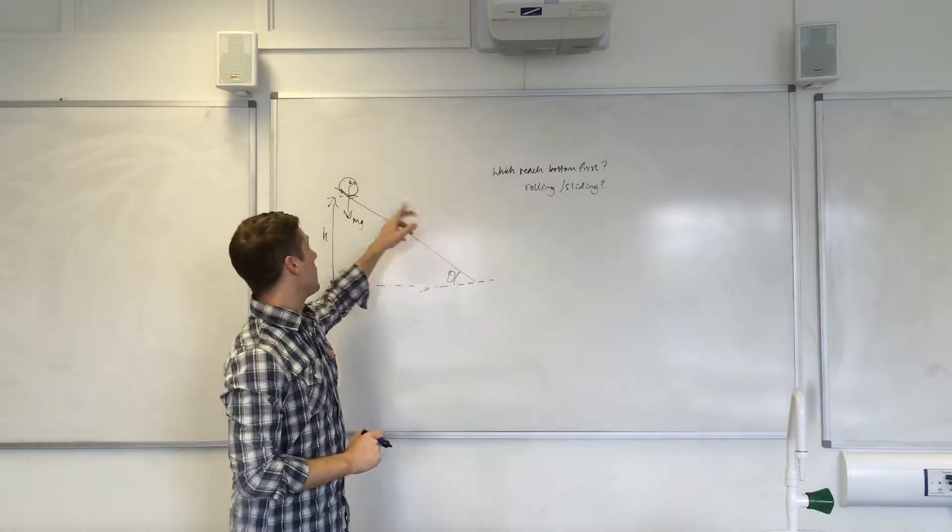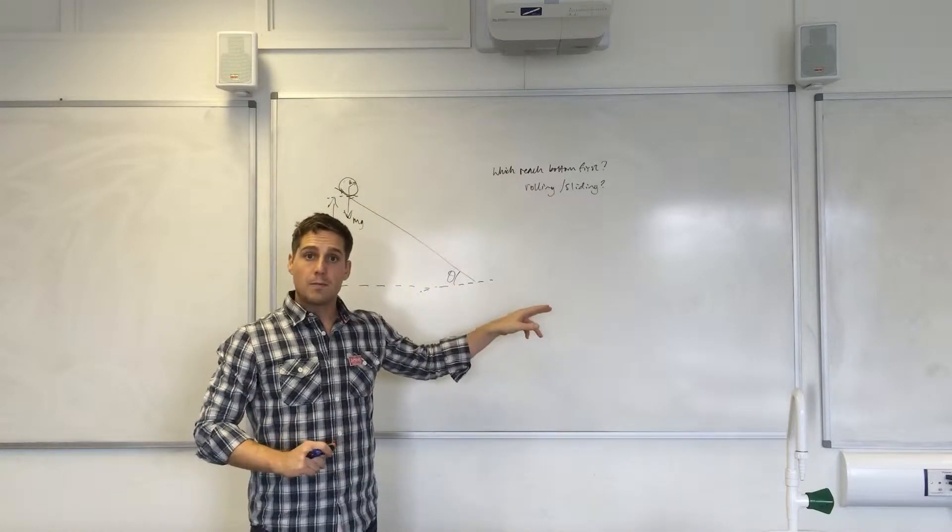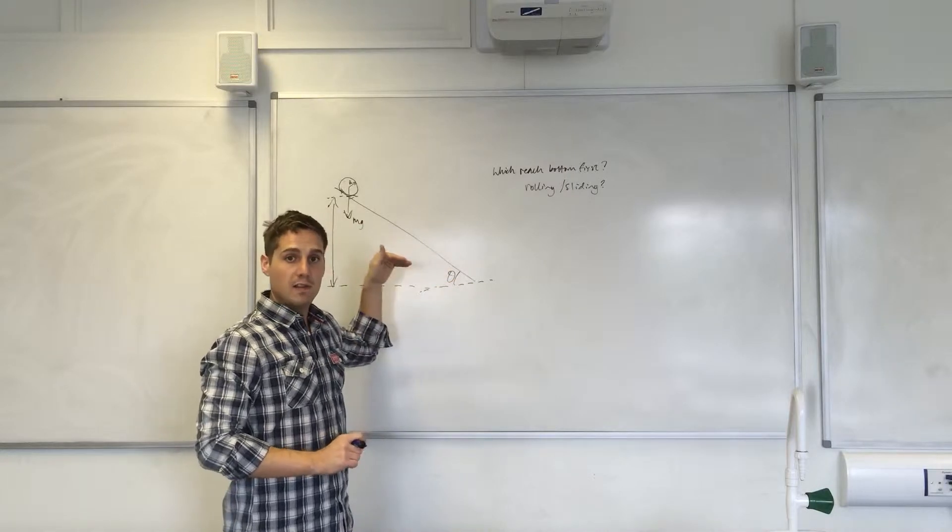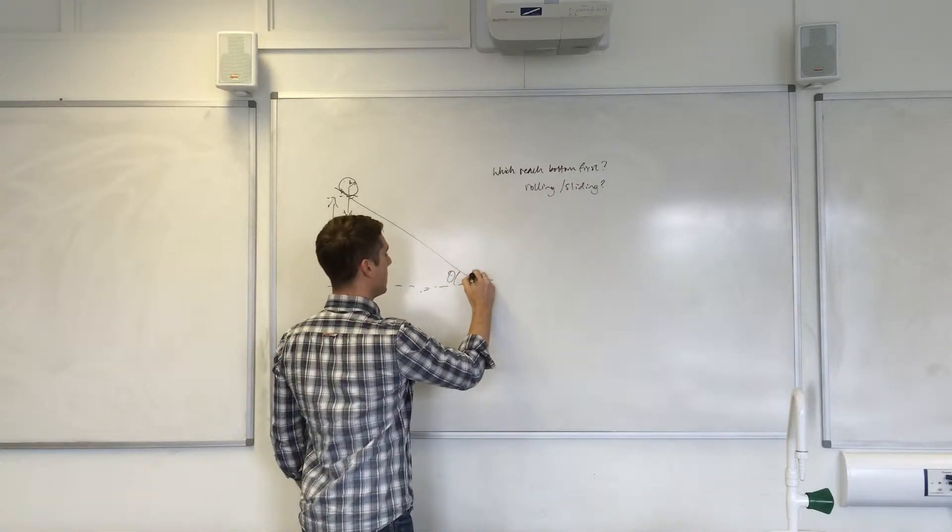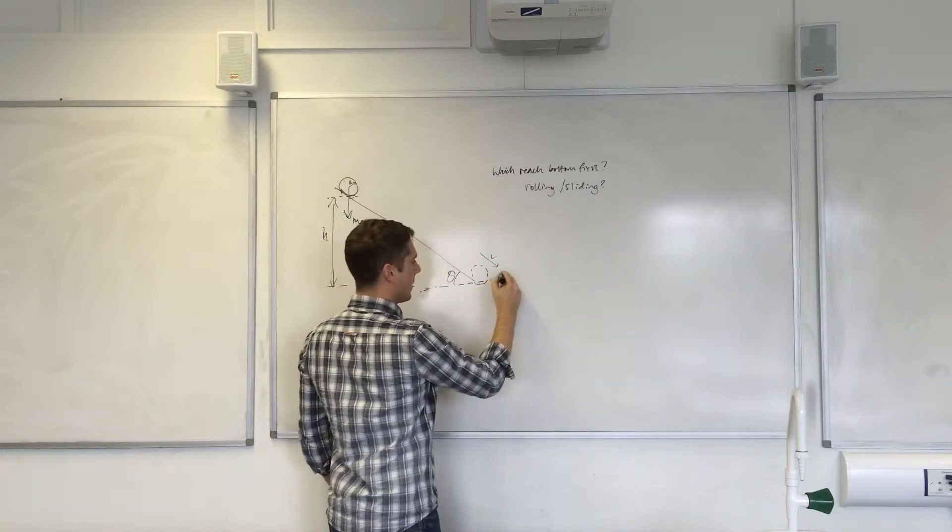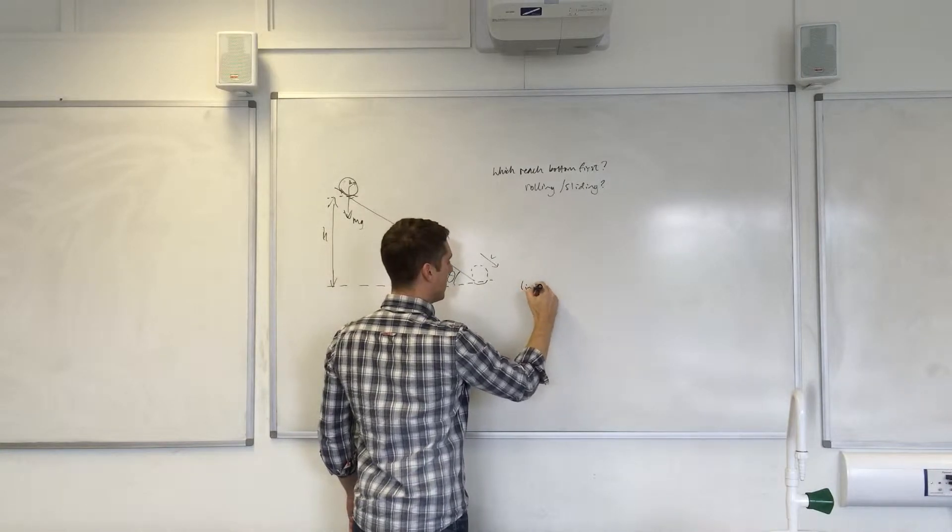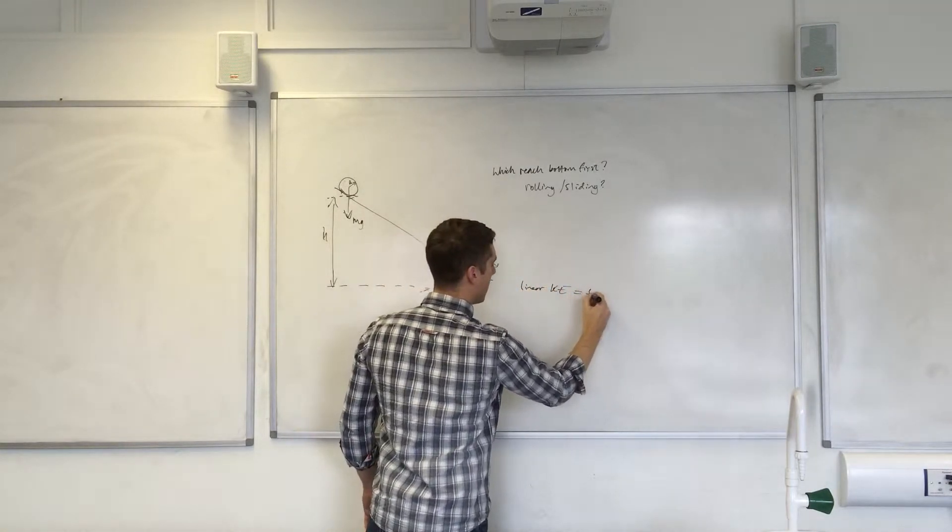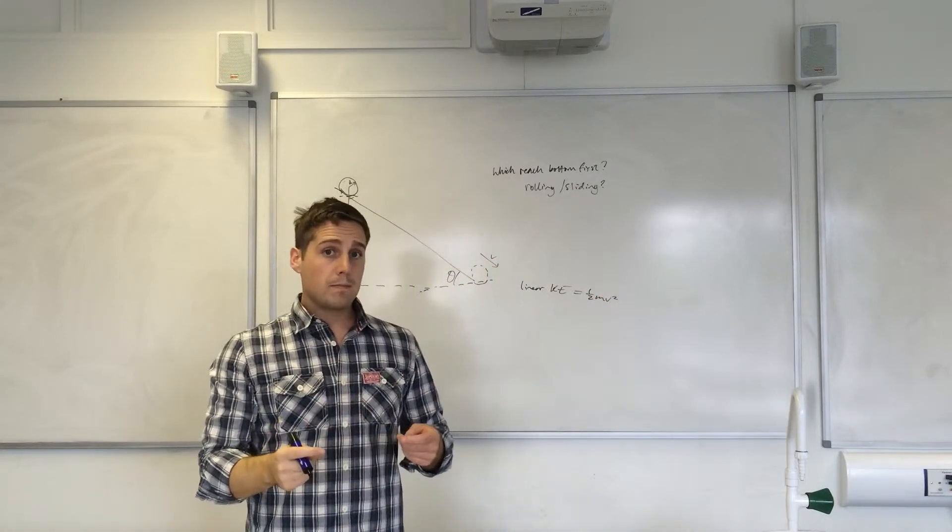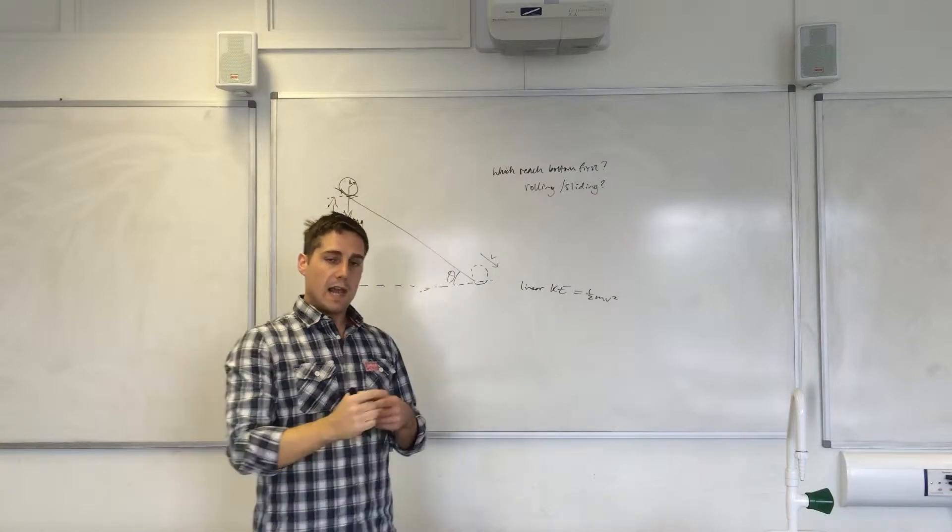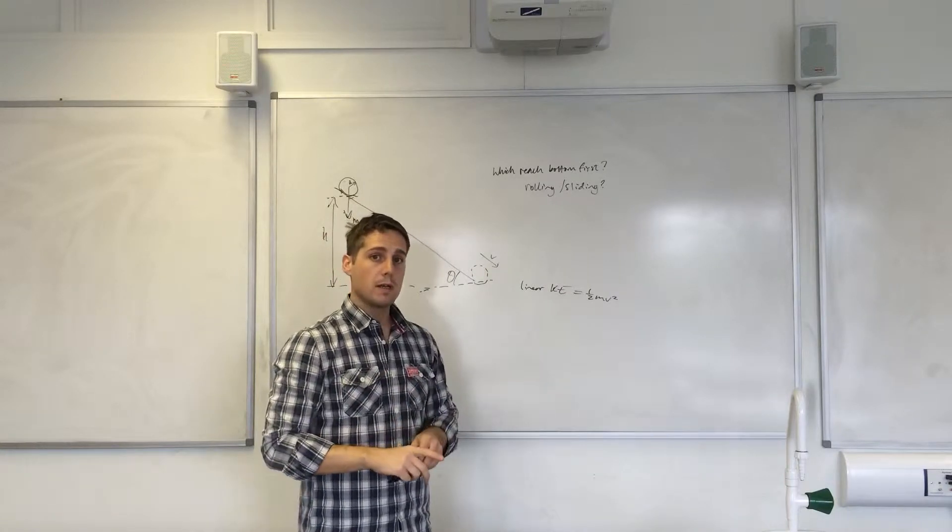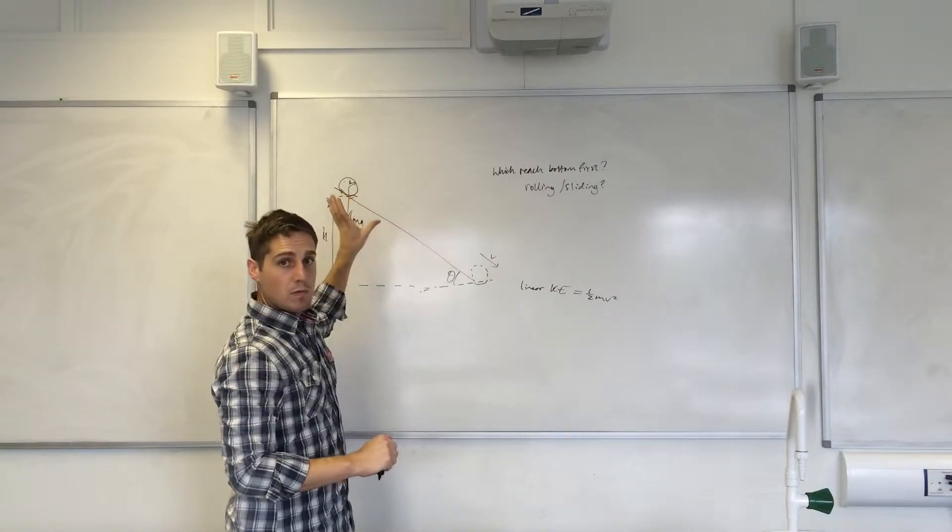If the cylinder were to slide down, then its GPE will be converted into kinetic energy—that's linear kinetic energy. So when it reaches the bottom, it's going to have velocity or speed associated with that half mv squared. If, however, it were rolling, well it takes energy to get something rolling, or a rolling object has energy, so therefore that energy had to come from somewhere.